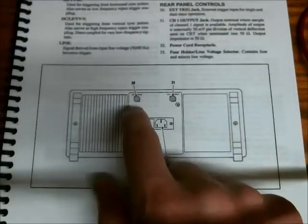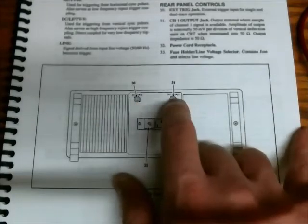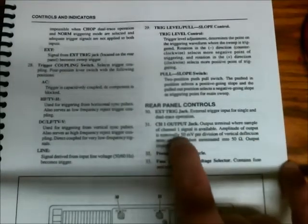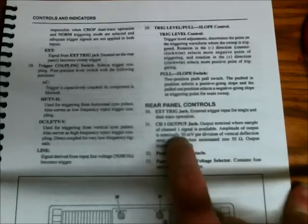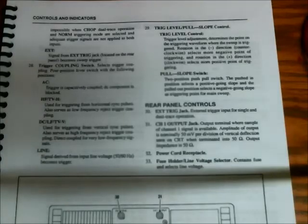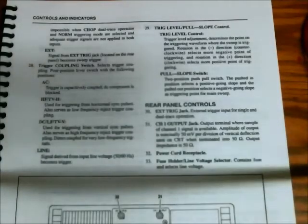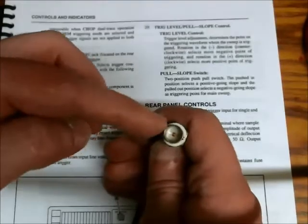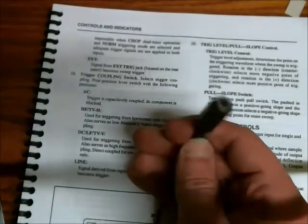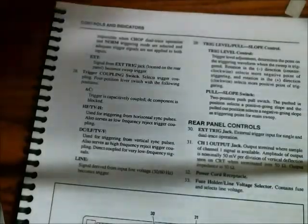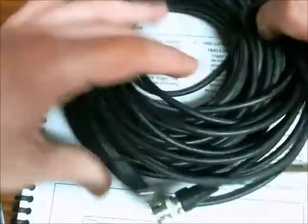On the back of my oscilloscope I have two BNC connections — one for the external trigger and one is the channel one output. According to the manual, the output amplitude is 50 millivolts per division, so 8 times 0.05 equals 0.4 volts, which is a comfortable range for the line-in on your PC. So you're capable of recording that signal using the line-in. All you need is a BNC connector, a headphone jack, and depending on how far away your oscilloscope is from your PC, a BNC cable.